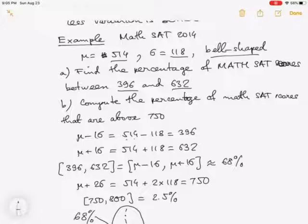So the interval 396 to 632 is exactly the interval from mu minus 1 sigma to mu plus 1 sigma. That means this is the population that lies between mu minus 1 sigma to mu plus 1 sigma. By the empirical rule, this is about 68 percent of the data.